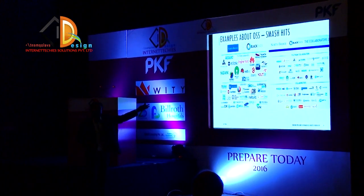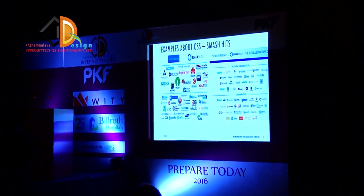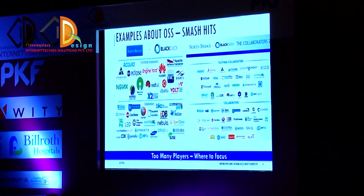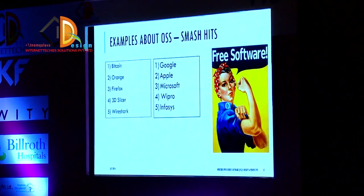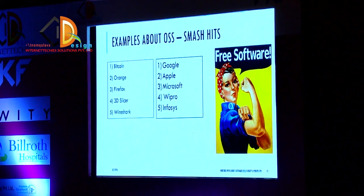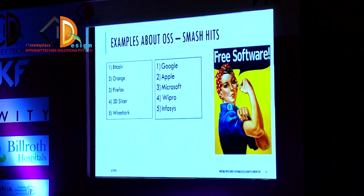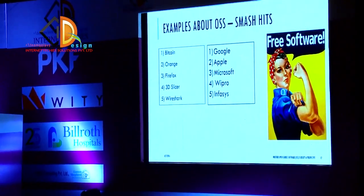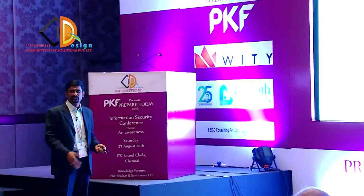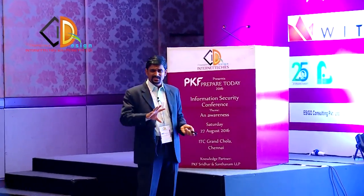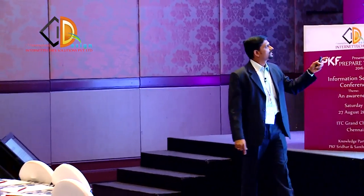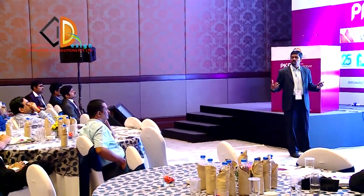Looking at the landscape — 2015 on the left, 2016 on the right — many players are working in open source. The crux is: too many players, so where to focus? A few prominent examples include Bitcoin, Firefox, Wireshark, and 3D Slicer. On the other side, companies truly embracing open source include Google, Apple, Microsoft, Wipro, and Infosys. There is a huge energy and aura across the OSS circle. Open source software covers all domains: audio, bioinformatics, configuration management, device drivers, geophysics, health, mathematics, television, video games, web applications — you name it. There are immense numbers of open source tools available; you just have to do the right risk assessment based on business requirements.